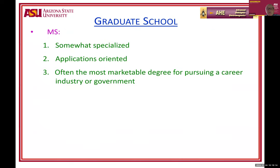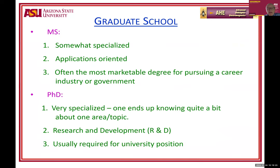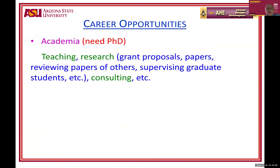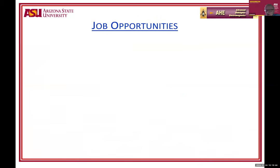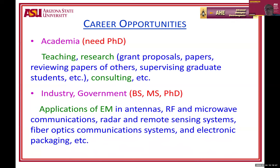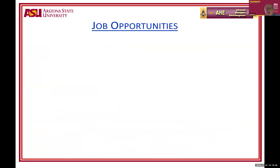Graduate school: master's level is somewhat specialized and applications-oriented; PhD is more specialized in a particular area, focusing on research and development. A PhD is required for positions in academia. Industry hires at bachelor's, master's, and PhD levels — you can see what you typically do in each: teaching, research, applications. Job opportunities exist at all kinds of companies, especially in the Phoenix area. Government opportunities exist as well — I worked for NASA back in the 1960s.